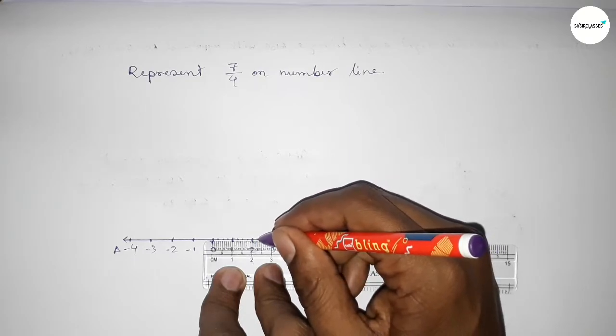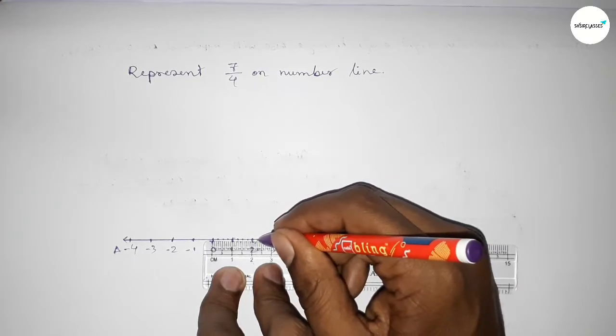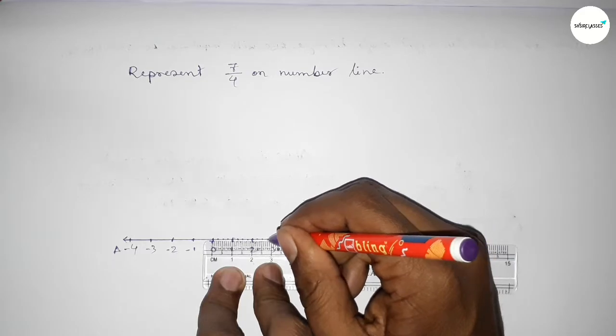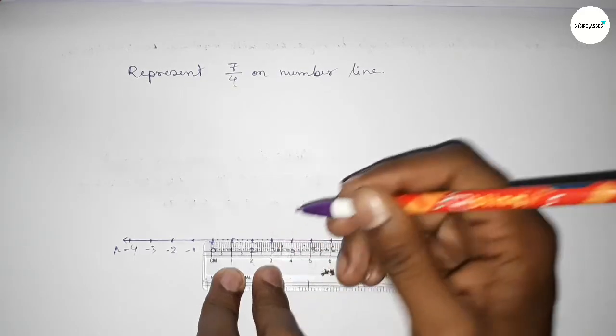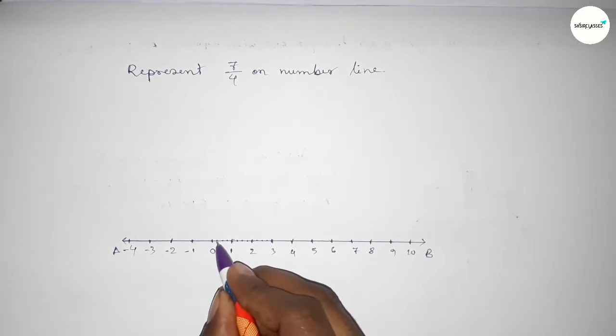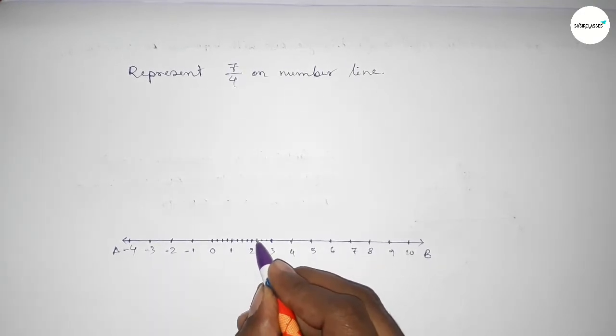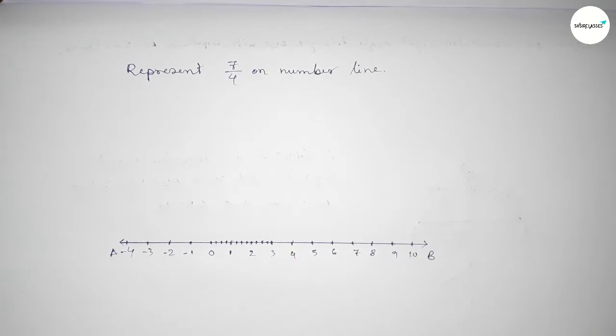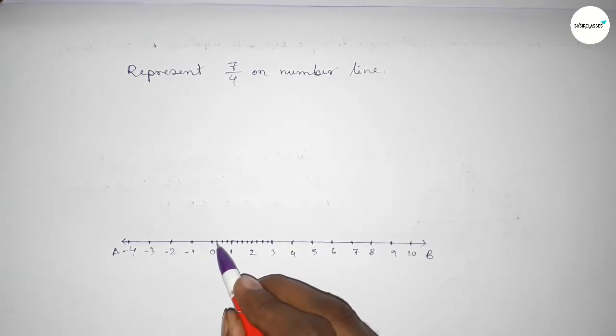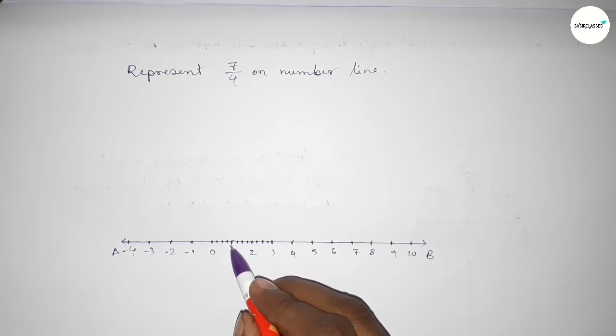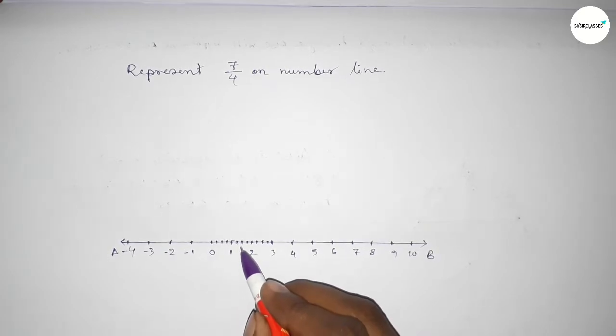Mark the numbers with deep color to understand perfectly. This is 1/4, 2/4, 3/4, 4/4, 5/4, 6/4, and this is 7/4 on the number line.